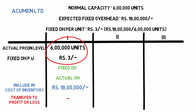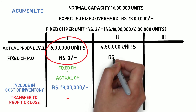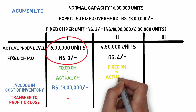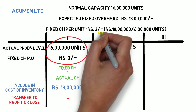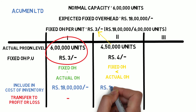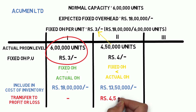In the second case, the actual production level turns out to be 4 lakh units, so the fixed overhead per unit would be 4 rupees. Here the fixed production overhead is greater than what is absorbed at normal capacity. Since fixed overhead remains constant at 18 lakh rupees, only 13 lakh 50,000 rupees — based on normal capacity applied to actual production — would be included in the cost of inventory, and the balance of 4 lakh 50,000 rupees would be transferred to profit or loss.